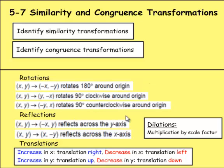Reflections reflect across the y-axis, which would be a left or right reflection, or across the x-axis, which would be an up and down reflection. Translations either go right or left, or up or down, or both. And dilations multiply times a scale factor.